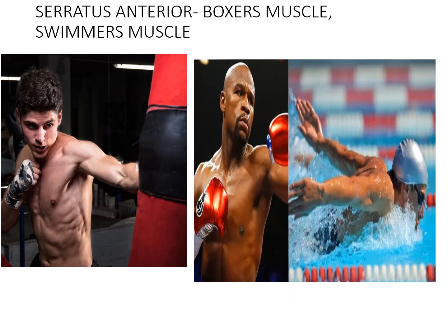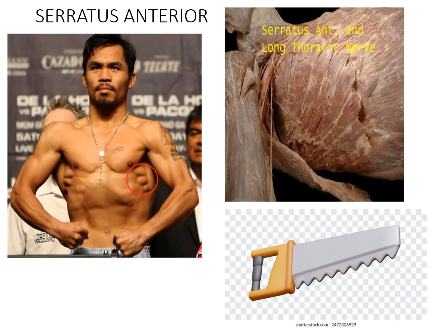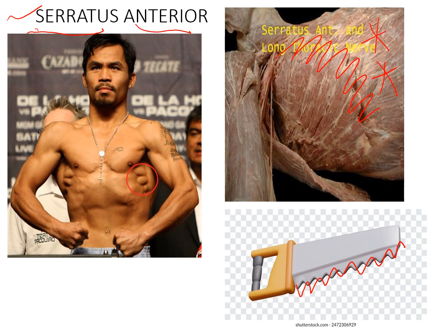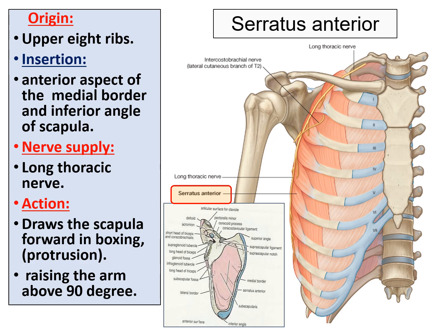Next is a very important five-marker: serratus anterior, also called the boxer's muscle or the swimmer's muscle — you can appreciate it becoming very prominent in those actions. It is named serratus because it looks serrated, and anterior because it is placed in the anterior aspect of the body. Its origin is from the anterior aspect of the upper eight ribs in the mid-axillary line. Its insertion is onto the anterior surface of the medial border of the scapula.